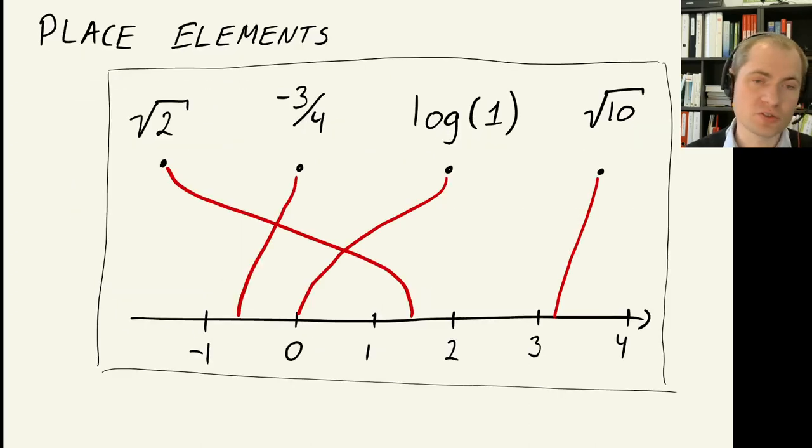We can also look into how to place elements on a number line. So, if you have different expressions, for instance, the log of 1, where should that be placed? That should be exactly 0, for instance. What about the square root of 10, that's slightly more than 3, and so on, to see, can the students place this on a suitable location on this number line?